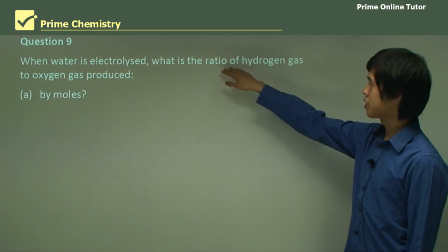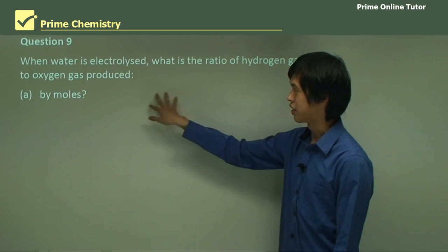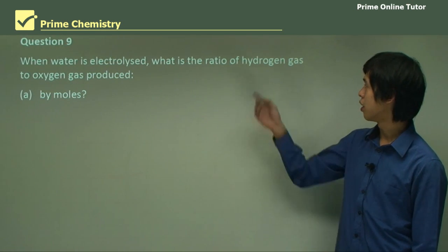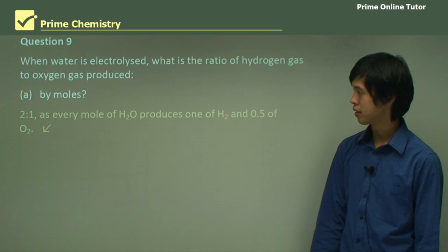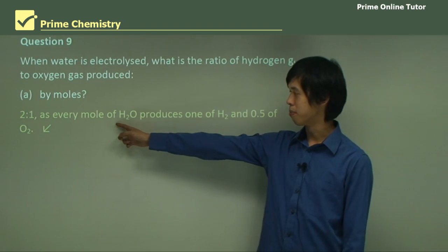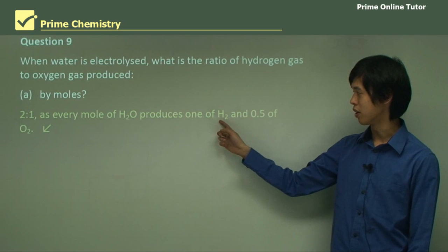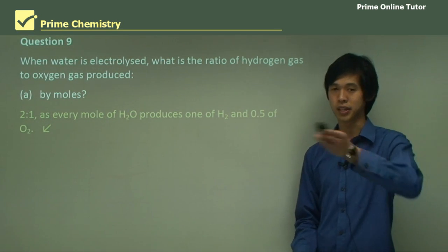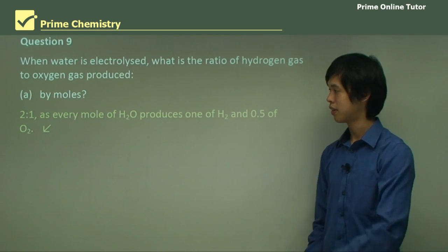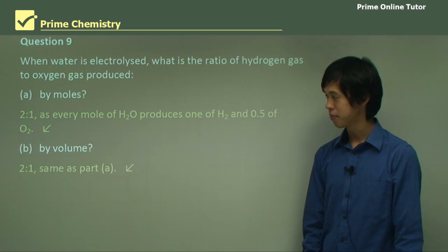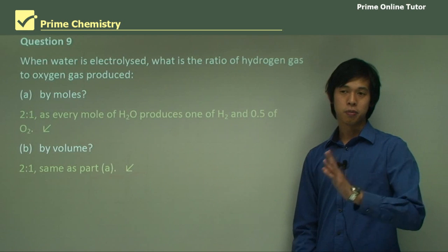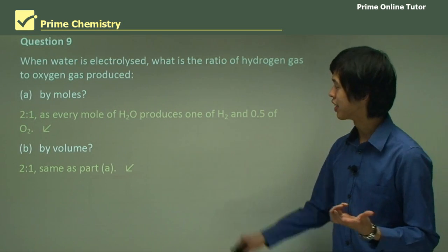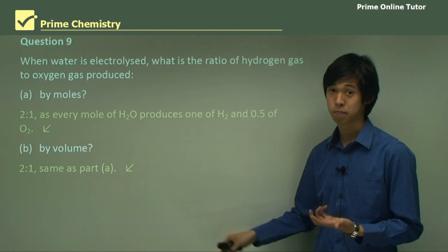When water is electrolyzed, what is the ratio of hydrogen gas to oxygen gas produced by moles? What is the ratio of hydrogen to oxygen gas? Two to one. So for every mole of H2O, you produce one mole of H2 and half a mole of O2. So it's always twice as many H2 moles compared to O2 moles. And by volume, it's the same. By volume, because the volume of a gas is related to how many moles you have, then it has to be the same.